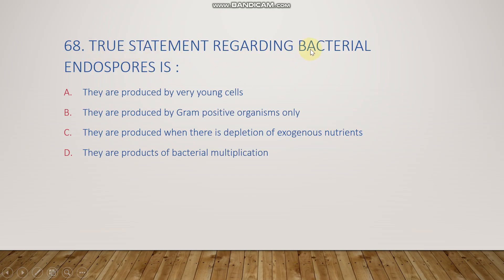The next question: a true statement regarding bacterial endospores — they are produced by very young cells, produced by gram-positive organisms only, produced when there is depletion of exogenous nutrients, or they are products of bacterial multiplication? The right answer is option C: they are produced when there is depletion of exogenous nutrients. When vegetative cells face harsh conditions, they convert to endospores, a stable form of bacteria that is metabolically inert.